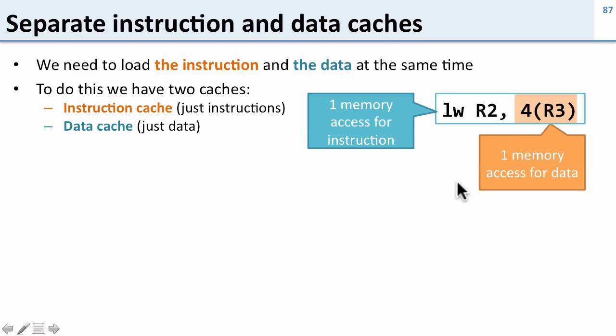To do this we have two caches. We have one cache for instructions and one cache for data, not surprisingly called the instruction cache or iCache and the data cache or dCache.